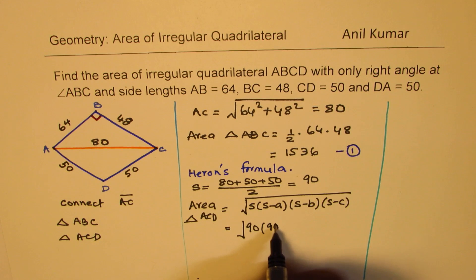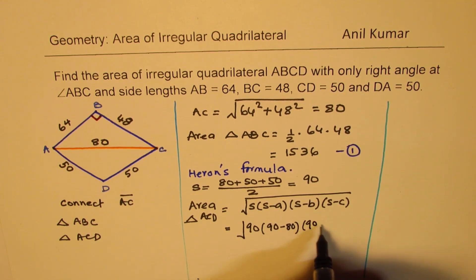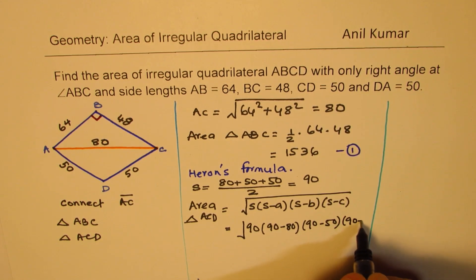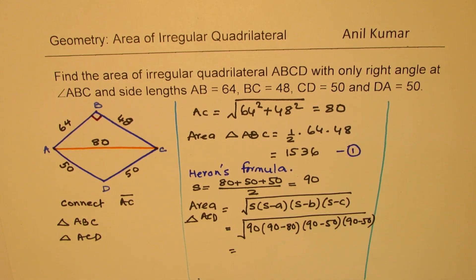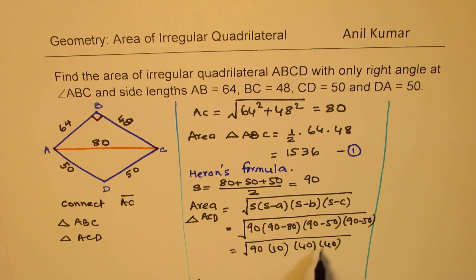S is 90 for us. 90 minus 80 times 90 minus 50 times 90 minus 50, clear? So we can use the calculator once again to find this solution. It is 90 times that is 10. Perfect. And this is 40 times 40. So that's easy. So one of the 40s come out. 90 squared is 900. So we get 40 times 30. So that is 1200. So we get the area of the triangle ACD using the Heron's formula.